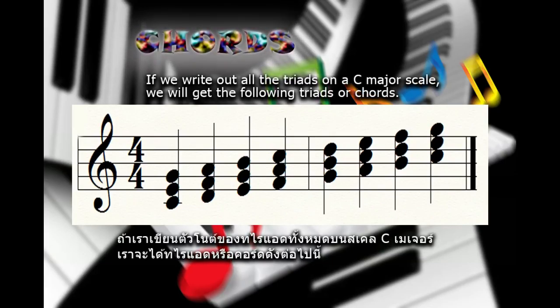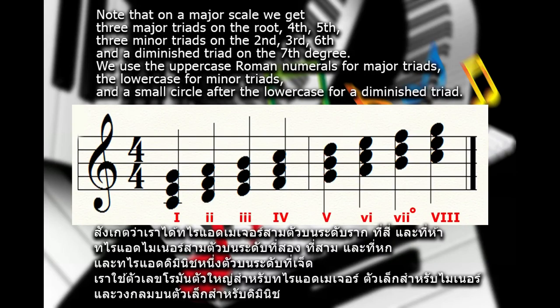If we write out all the triads on a C major scale, we will get the following triads or chords. Note that on a major scale we get three major triads on the root, fourth, fifth, three minor triads on the second, third, sixth, and a diminished triad on the seventh degree.